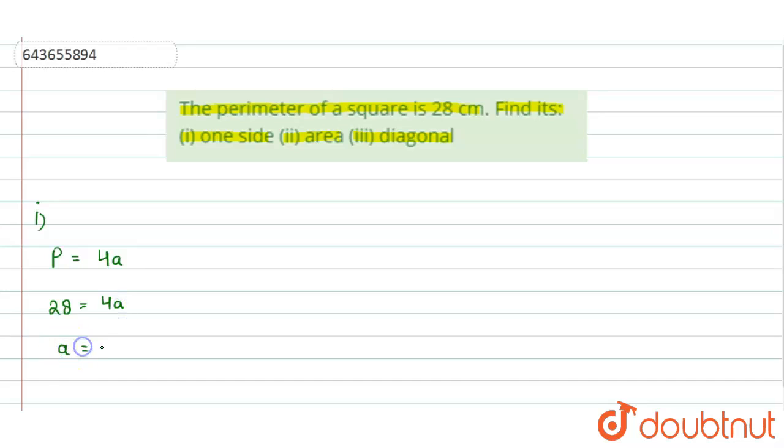From this we will get a equals 7 centimeters. So this is the side of the square, which is 7 centimeters.